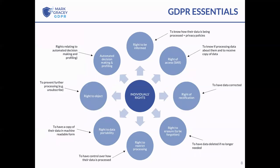All data subjects have eight individual rights. The most well-known is the right to be informed — Articles 13 and 14 of GDPR say that an individual has a right to understand how their data is being processed. This is why we have privacy policies. Article 13 relates to data collected directly from an individual. Article 14 requires you to notify individuals within a month if you collected their data from a third party or the public domain.